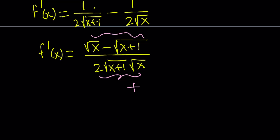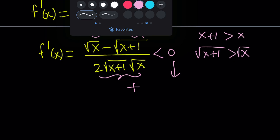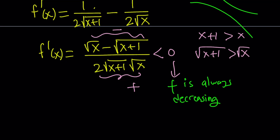A negative divided by a positive is negative, so the derivative of f is always negative, which means f is always decreasing. This means we don't have a maximum or minimum point — f is always decreasing. Is it like this or like that? We're going to find out.